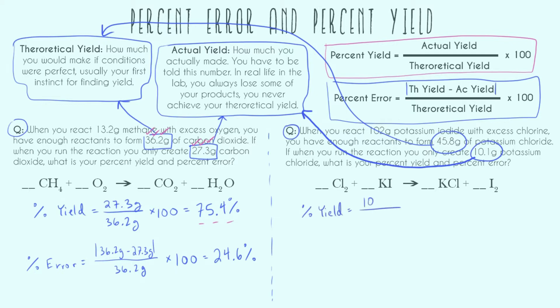So actual, 10.1 divided by theoretical, 45.8 times 100, with 3 sig figs once again, we can get to 22.1 percent was our percent yield. So very bad.